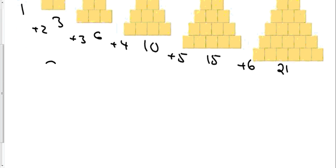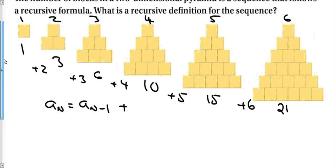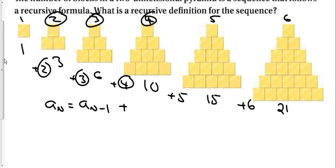So a sub n, in order to get the next term, I take the term before it. Every recursive formula will have something that looks like this: a sub n minus 1. And plus, well what are we adding each time? Well it's going up each time, just as the number of terms. The number of terms we're going is going up by 1 each time. So my recursive formula will just be adding n.